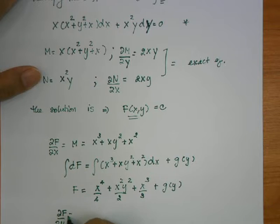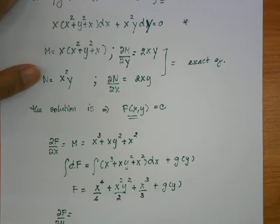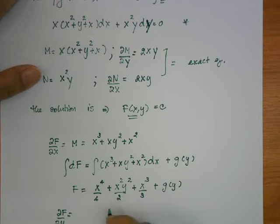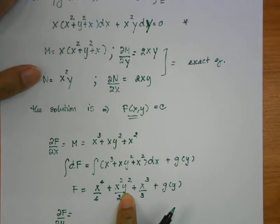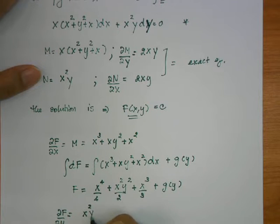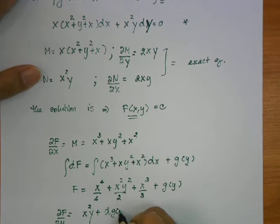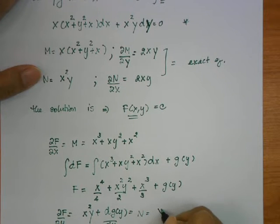Then we do the derivative of this f with respect to y, and we know it would be equal to N. When we differentiate with respect to y, the x⁴/4 term is gone. We would get the term x²y plus dg/dy equal to N. And our N is equal to x²y.